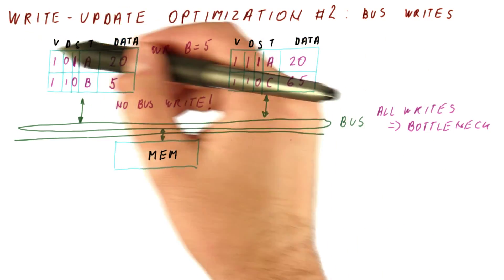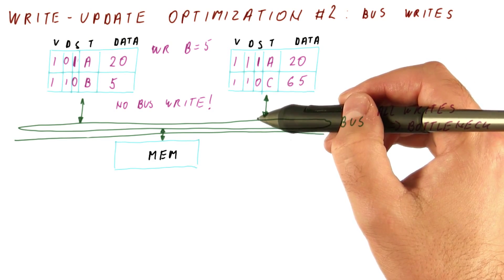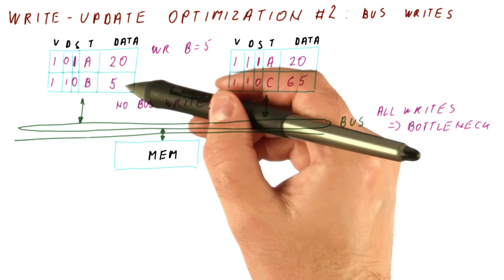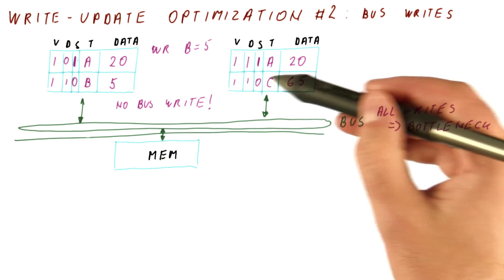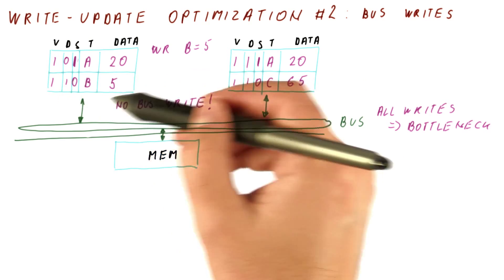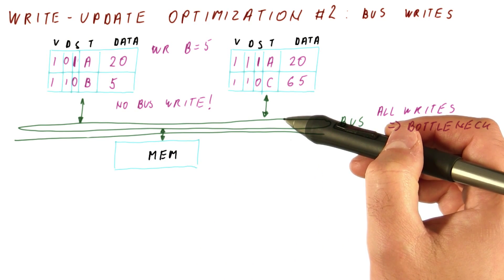So we still get the write-update behavior when there is sharing, but now we avoid writes going to the bus when there is no sharing. This can happen a lot. For example, B could be something that belongs to the stack of core 0. C could be something that is on the stack of core 1. So naturally, we will be just pushing and popping things to our own stack and never really needing to broadcast the update somewhere else.